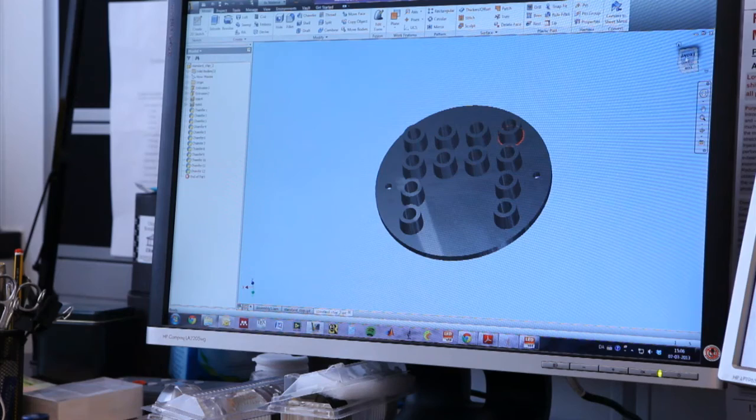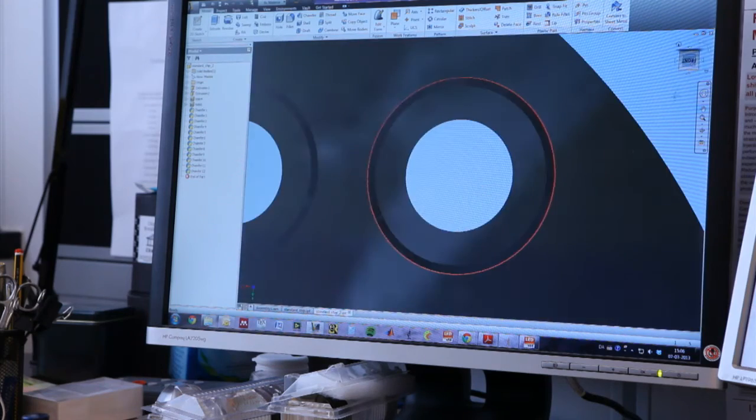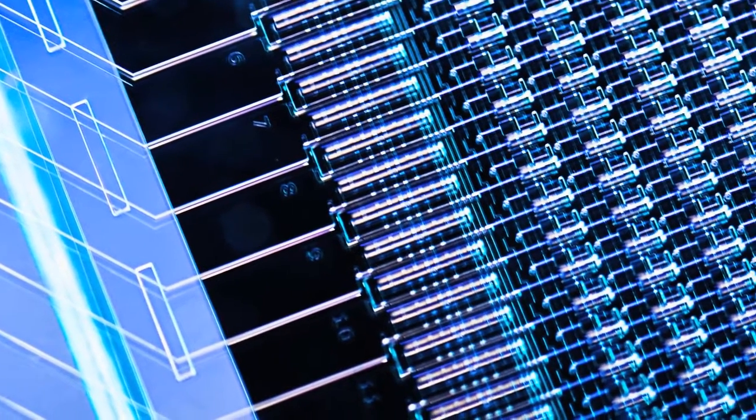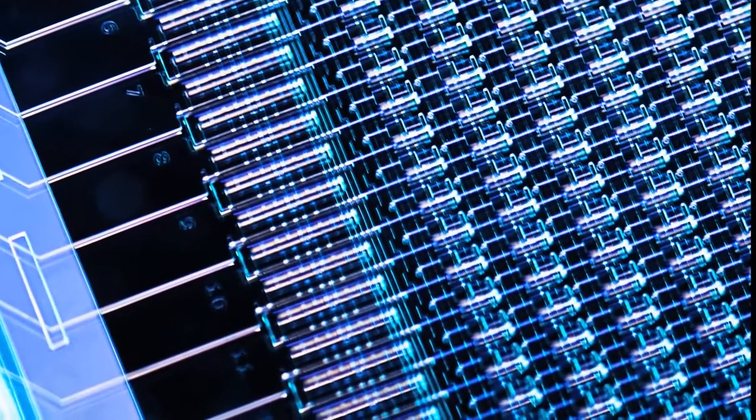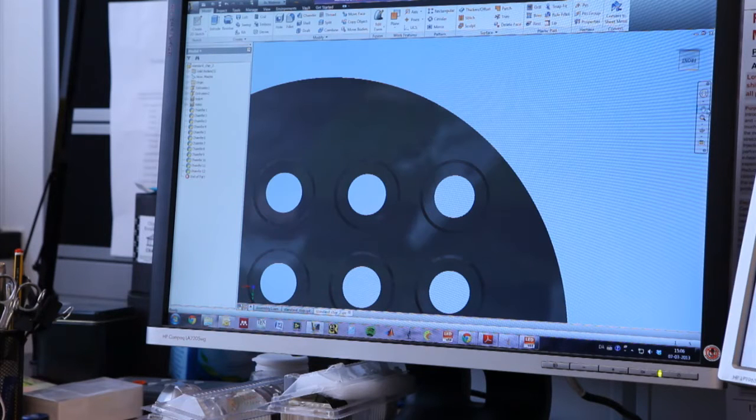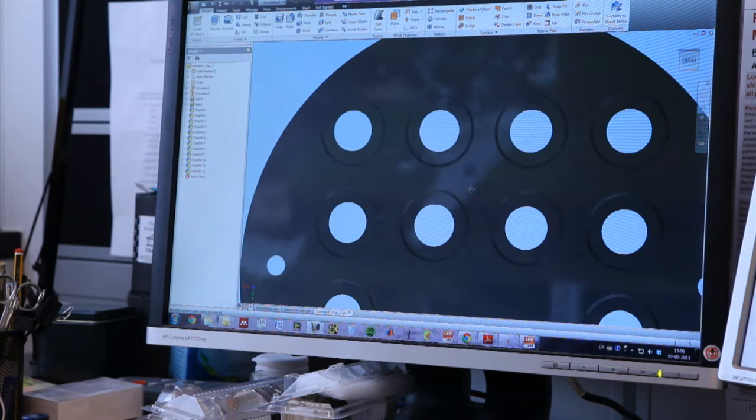Lab on a chip are plates the size of a fingernail that have tiny tubes measuring as little as one one-thousandth of a hair's width. The tubes work as flasks that connect to a miniature-sized chemical lab.